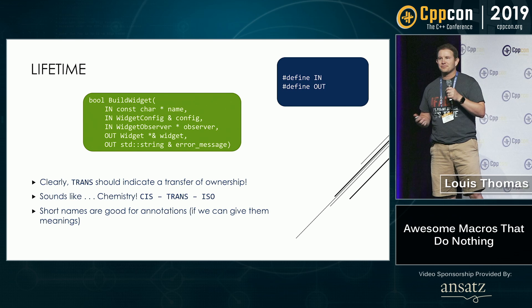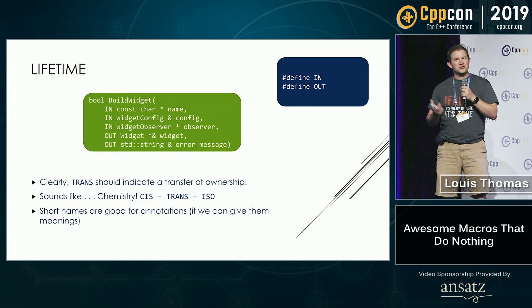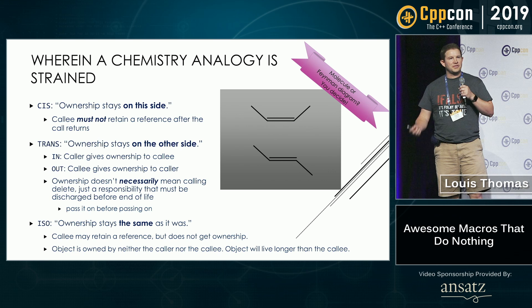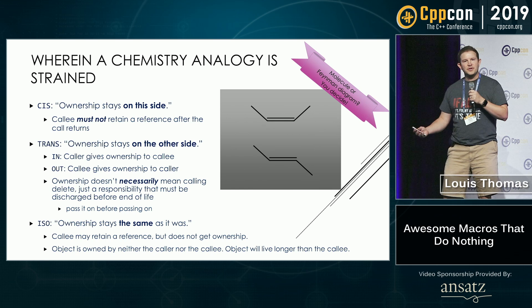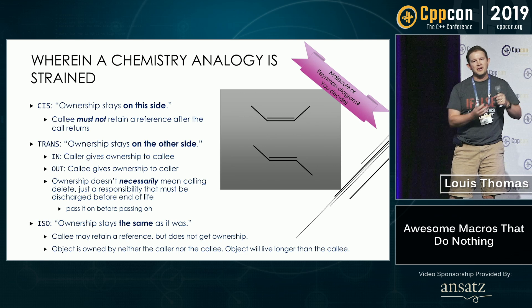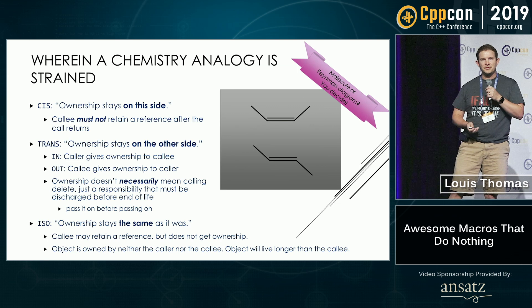What are some other words that go with trans? What came to me was chemistry terms: cis, trans, iso. Those are nice short names — they make good tags — and if we can come up with good meanings for them, maybe we can use those. So I went with a chemistry analogy using the actual Latin meanings. Cis means 'on this side,' so we use that to mean ownership stays on this side. If the callee gets a pointer, ownership still belongs to the caller when the function is done — the callee must not retain a reference; it's only valid during the call.